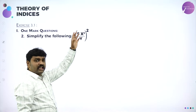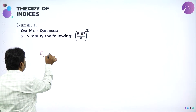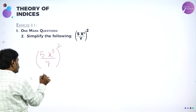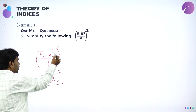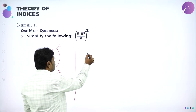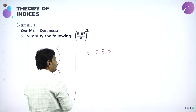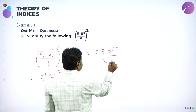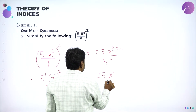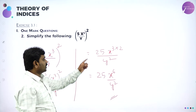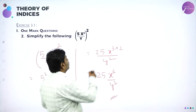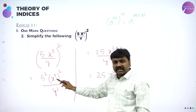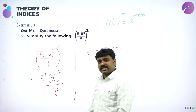Next: simplify (5x³/y) whole square. Take the square inside — it becomes 5 square times x cube whole square, divided by y square. That is 25 times x power 3 into 2, divided by y square. Using the law a power m whole power n equals a power m into n, we get 3 into 2 equals 6, so the answer is 25x⁶ divided by y square.